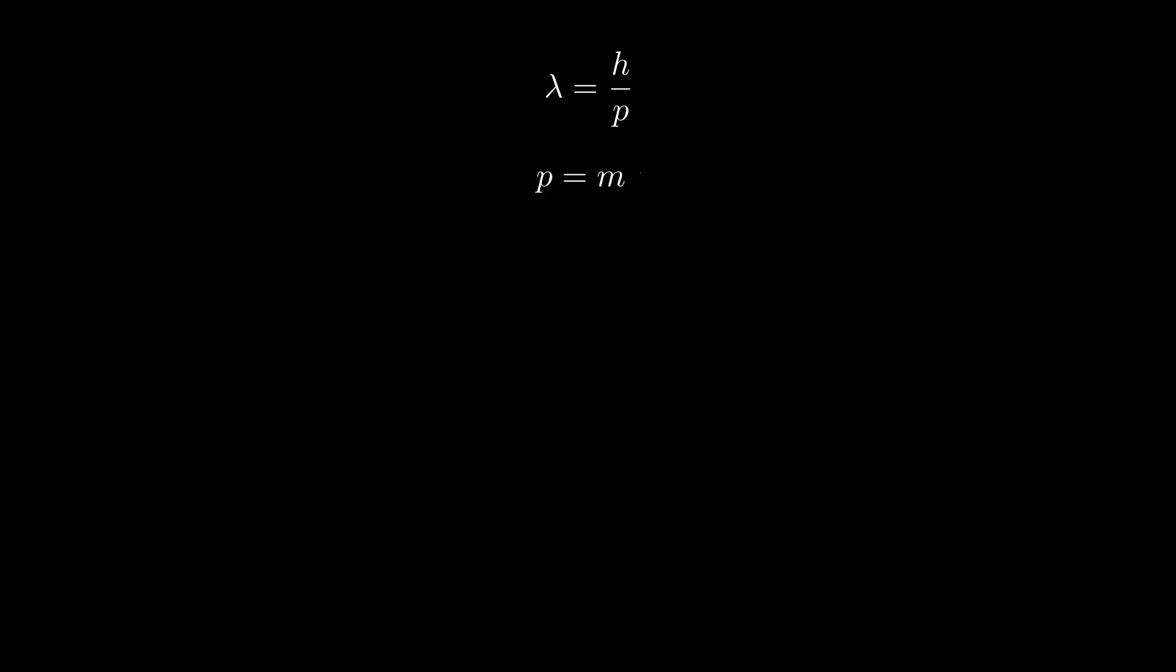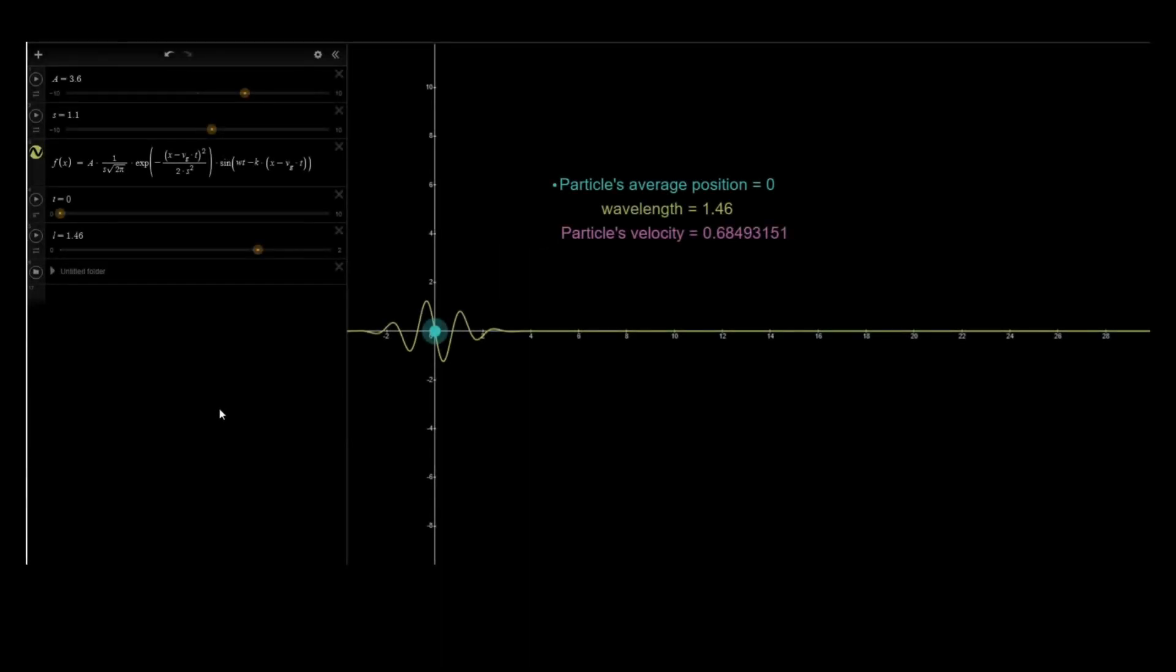P equals mass times velocity, the particle's velocity. H and M are just constants, and we may for now set them to 1 using some appropriate units. We then have P equals 1 over lambda. I made this simple demonstration in Desmos, and I used in it what's called a Gaussian wave packet, given by this function.